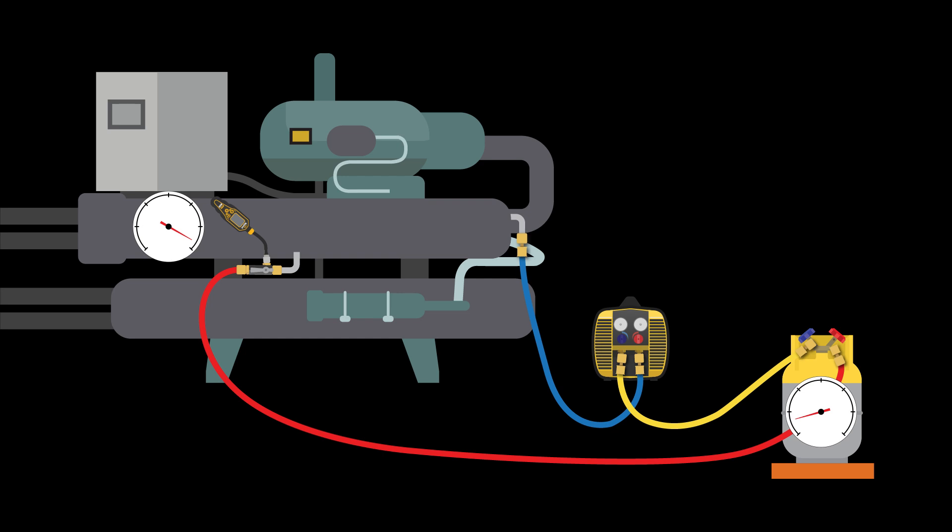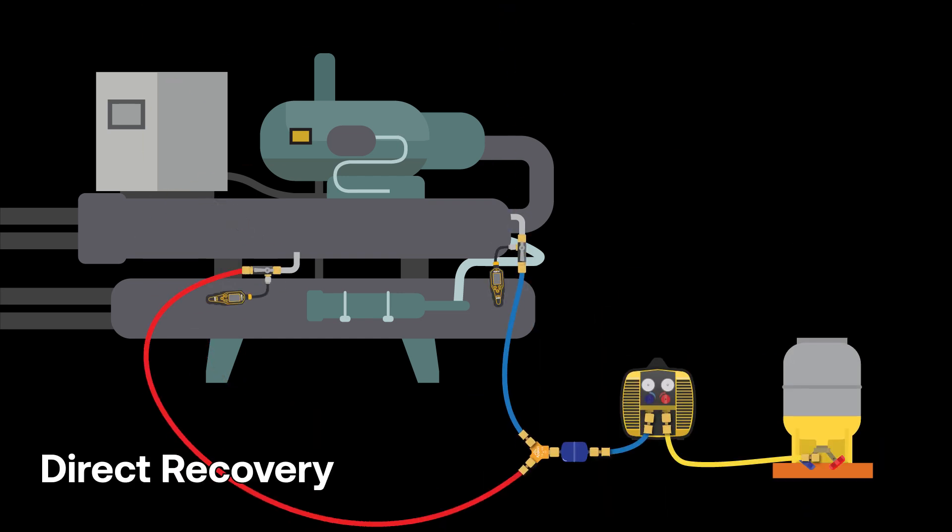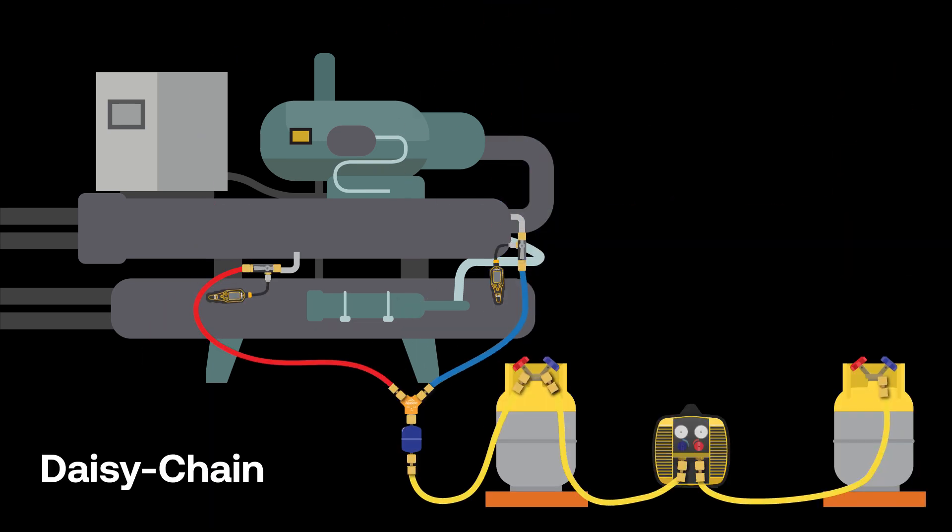The drawback to this closed-loop setup is that you will have to stop the process and switch to a direct refrigerant recovery setup to remove any remaining vapor. Since push-pull has to be stopped and reverted to a direct refrigerant recovery setup, sometimes it is preferred to use daisy-chain recovery on larger systems.